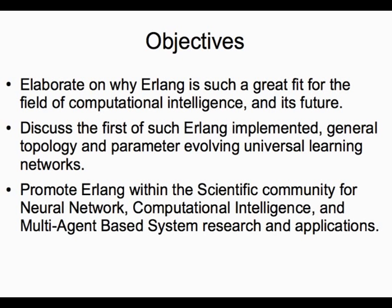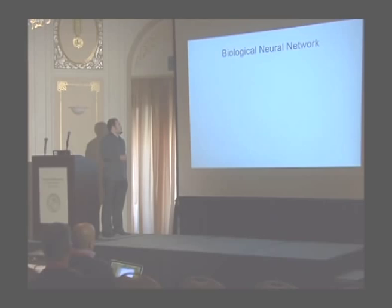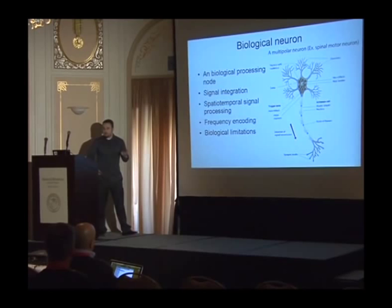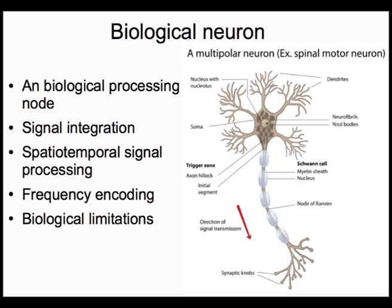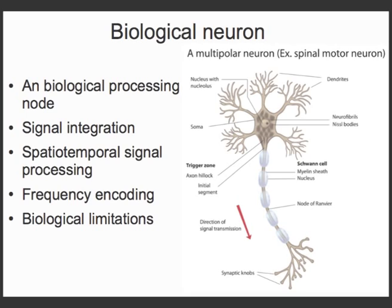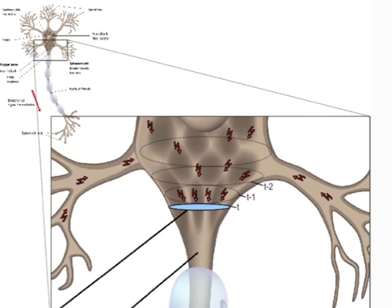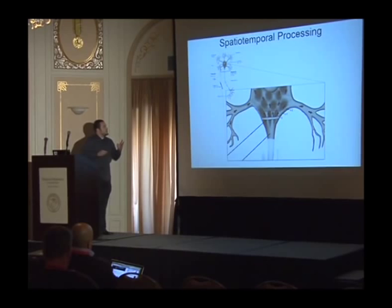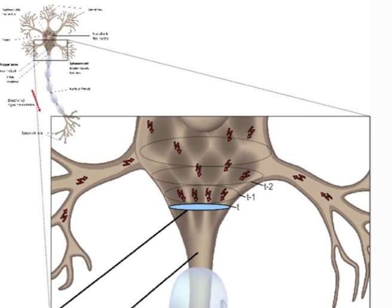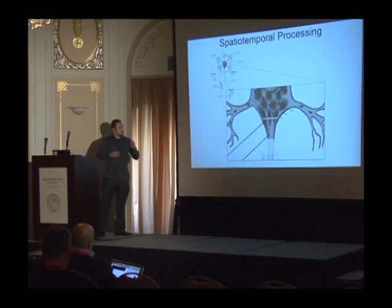Biological neural networks are chemical signal integrators. The brain is just a vast network of hundreds of billions of neurons connected together, processing signals. A standard neuron accepts inputs in the dendrite areas, the soma cell body processes them, and then creates an output and forwards it to other neurons. A standard neuron performs spatiotemporal signal integration, and the signal is encoded naturally in the frequency and the phase.